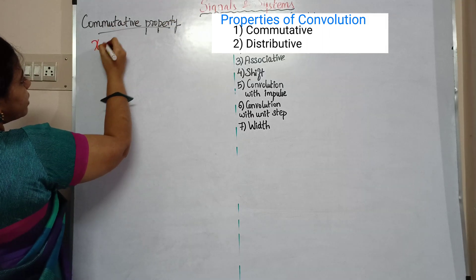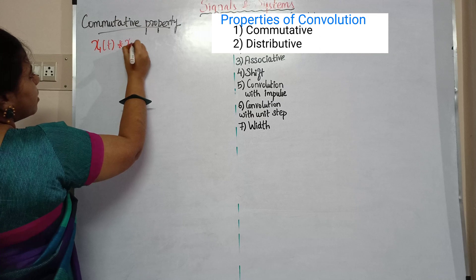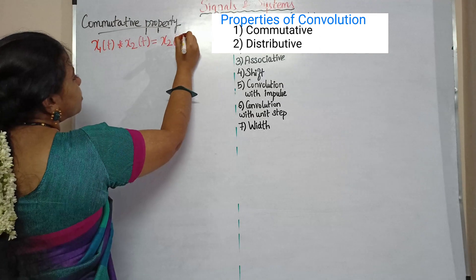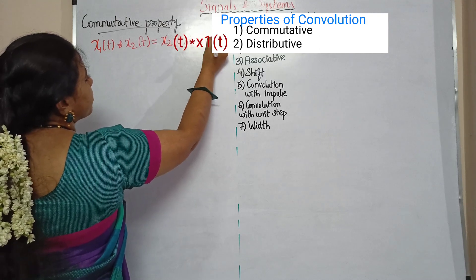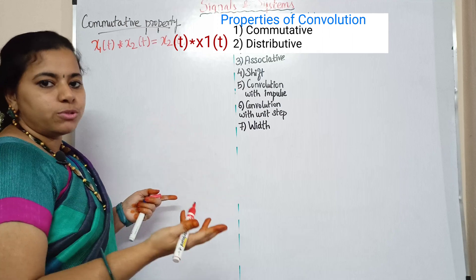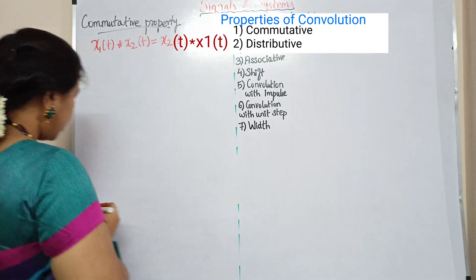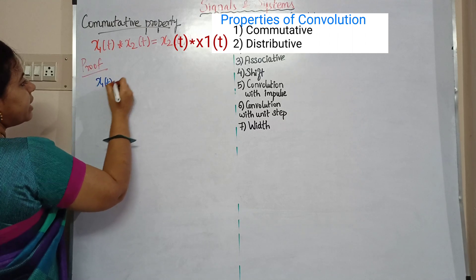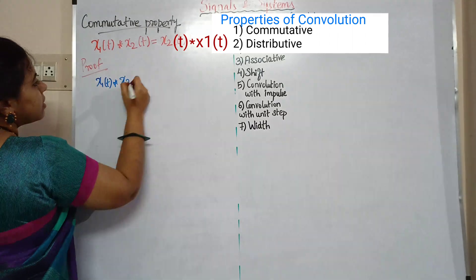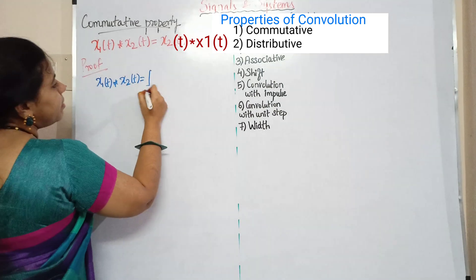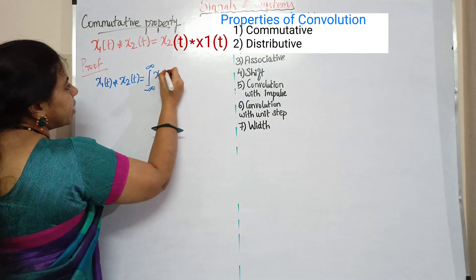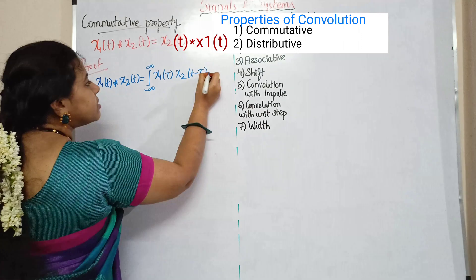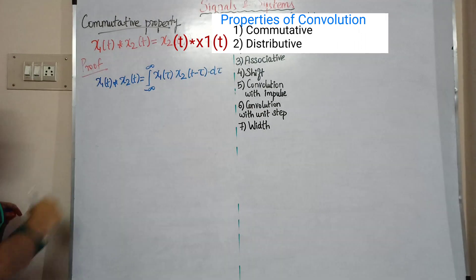So, this property is very simple. x1 of t convolution x2 of t is equal to x2 of t convolution x1 of t. x1 of t convolution x2 of t is equal to the integral from minus infinity to infinity of x1 of tau into x2 of t minus tau, d tau.